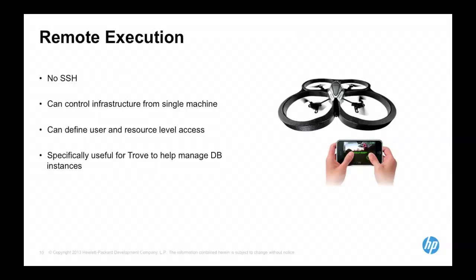We also use Salt for remote execution. This allows us to disable SSH to any control plane VM. We manage our infrastructure by logging into a single salt master and running salt commands to the various managed nodes. We use it to define user and resource level access — we can give the support team fewer privileges than the operations team. And because it can scale to thousands of nodes, we actually use it to manage all of our customer database instances. If the guest agent process has died, we can do a restart of that service through the salt master.